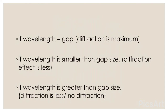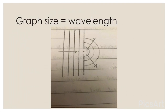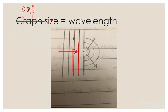This is the diagram for when the gap size is equal to the wavelength. Here these are the waves drawn. An important thing is to mark the direction. The direction is like this. You can see that the gap size and wavelength have almost equal distance.